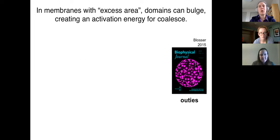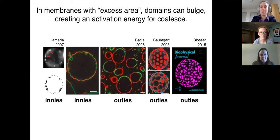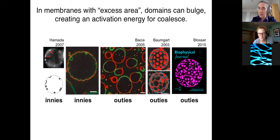One exception is when those individual domains are bulging out of the membrane, and that can create an activation energy against those domains coalescing. In my laboratory, we've seen domains that bulge out, other laboratories have seen domains that bulge out or bulge in, and a reason that those can be prevented from coalescing is because there's excess area in the membrane.